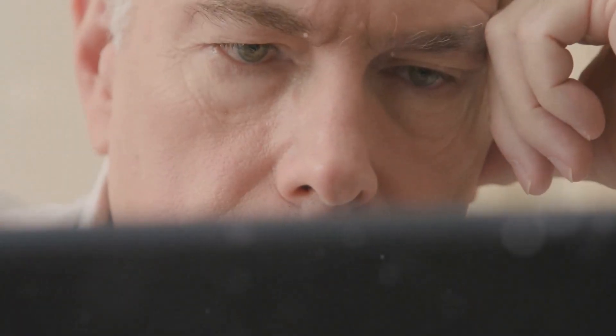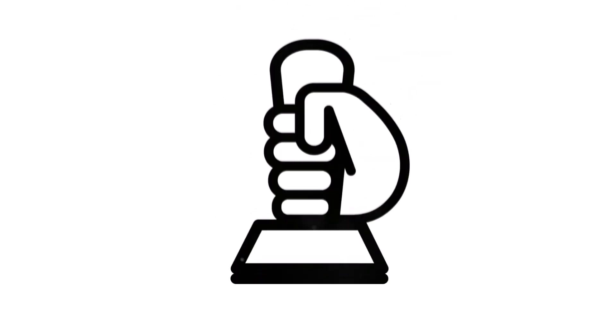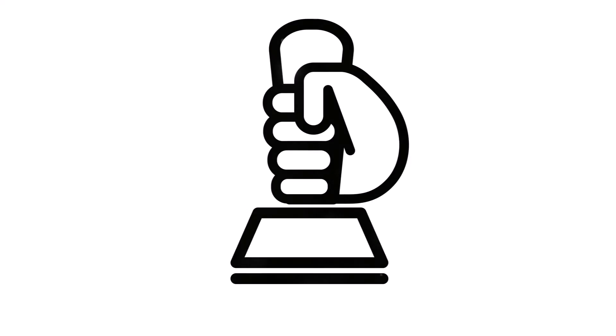Now that you've found information using boolean operators, the next step is making sure it's reliable. How can you tell if a web page is credible? Step one is to always be critical and look it over before trusting it.